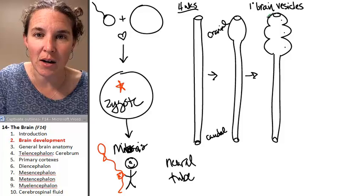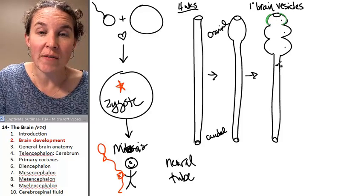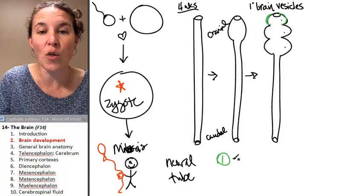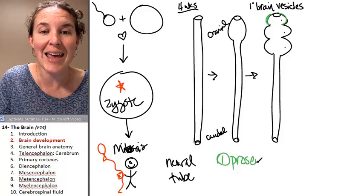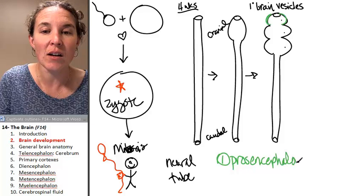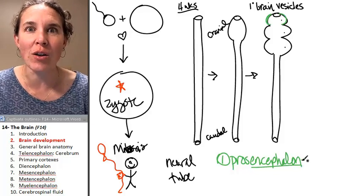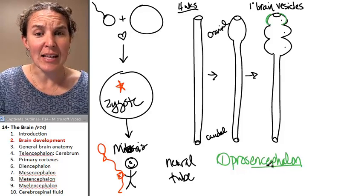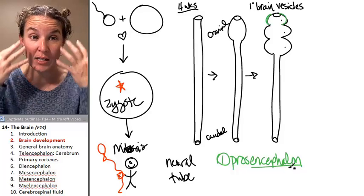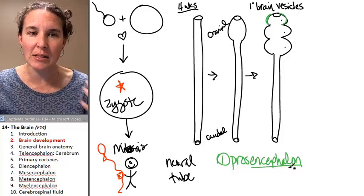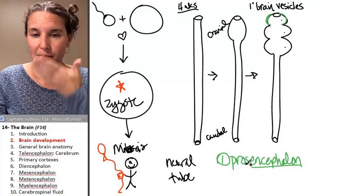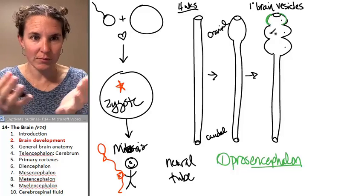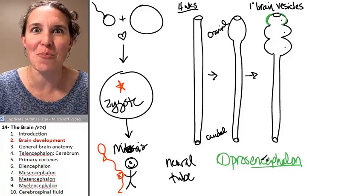I'm going to tell you what their names are. The first primary brain vesicle is called the prosencephalon. The nice thing is that all of my brain vesicles end in encephalon. Ceph means head. So encephalon means toward the head end. So my prosencephalon is this first most cranial bulb, primary brain vesicle.